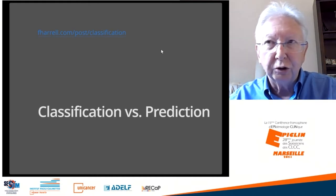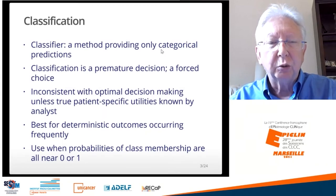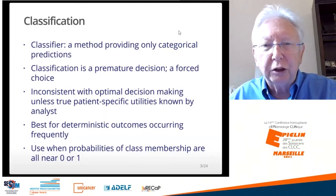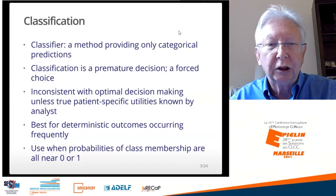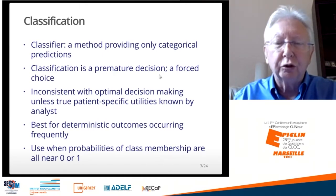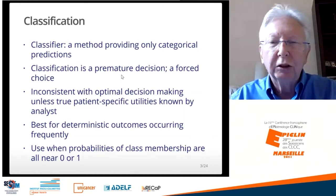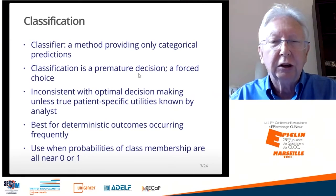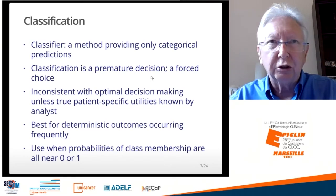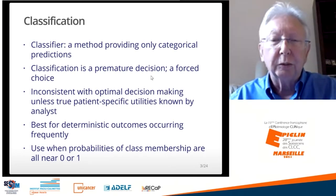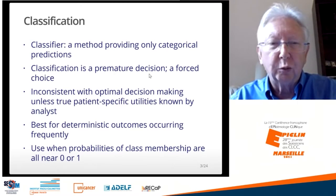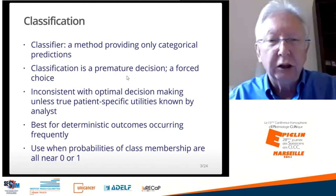Classification and prediction are two distinctly different tasks. So what is a classifier? A classifier is a method that provides only categorical predictions — a forced choice, which I call a premature decision, because a decision can't really be made until you have a utility function. A classifier is trying to make a decision such as diseased or not, or whether you're going to die or not die.